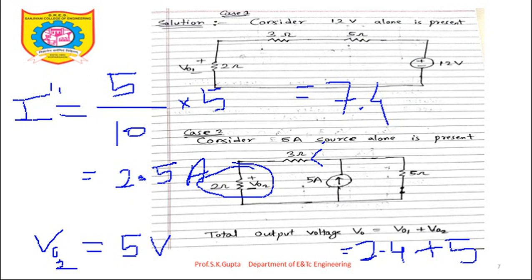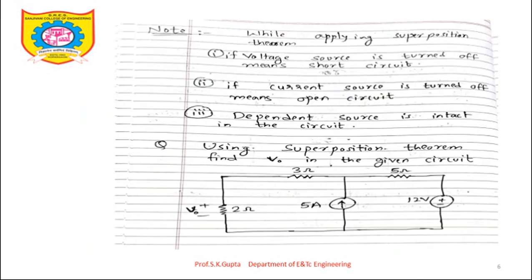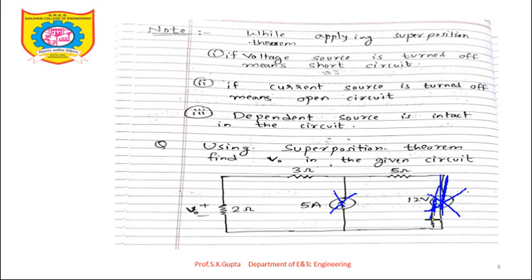To summarize: the given circuit required finding V0. In case 1, the 12V source was present and the 5A current source was turned off (open circuit); V01 = 2.4V. In case 2, the 5A source was present and the 12V voltage source was turned off (short circuit); V02 = 5V. Their algebraic sum gives V0 = 7.4V. Other network analysis methods can also be used to calculate V01 and V02. Thank you.